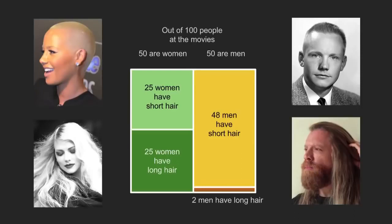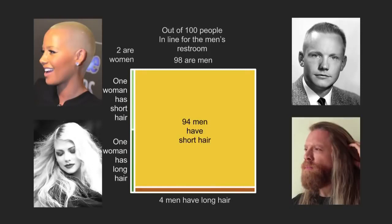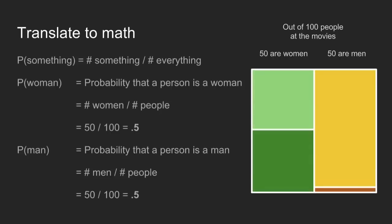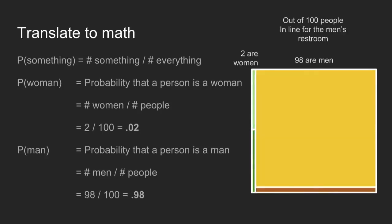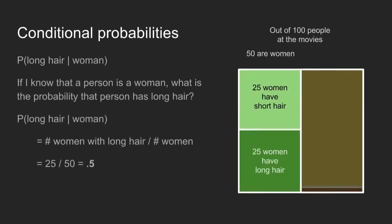Out of 100 people at the movies overall, we'll make explicit that 50 of them are women and 50 of them are men. In the line for the men's restroom, they break down a little differently. To translate this to math: the probability that a person is a woman is the total number of women divided by the total number of people — 50%. Similarly for men. Moving to the men's restroom line, the probability that someone is a woman is 2%, 98% for men. Now Bayes' theorem is a little bit tricky. So to be very precise, we're going to have to talk math.